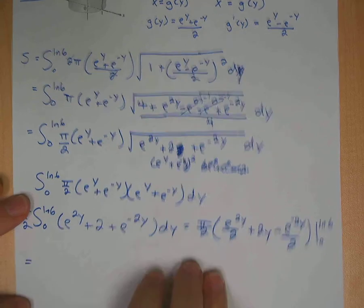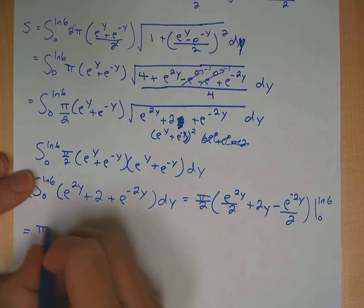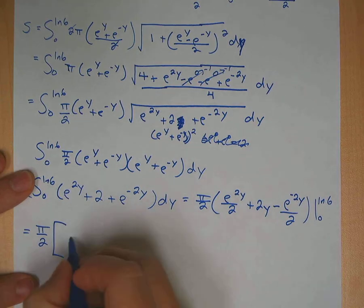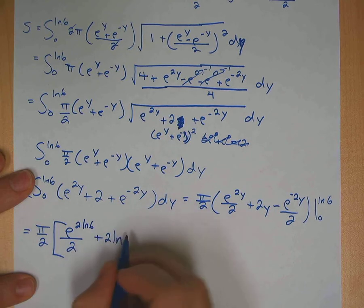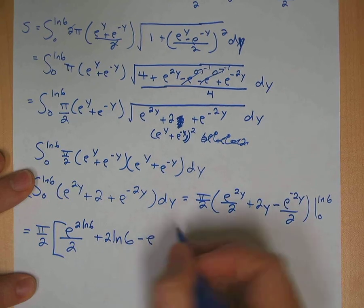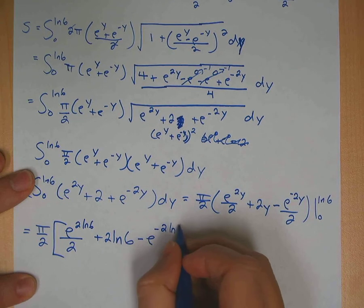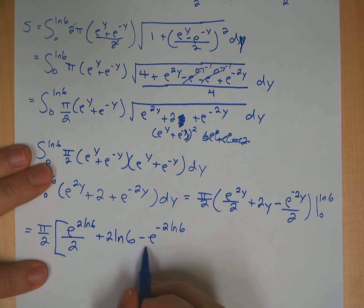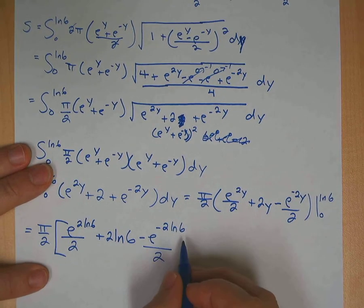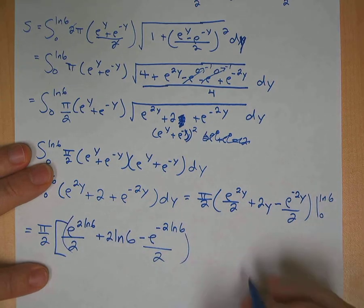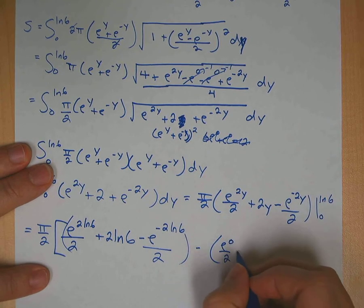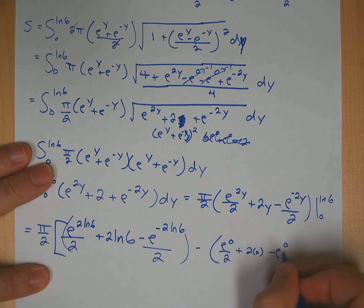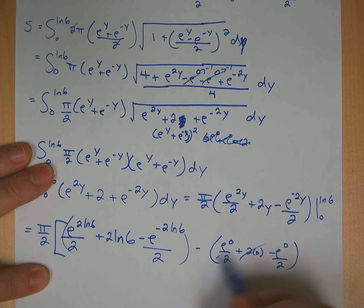Okay, so now just plug in our limits here. We're about done. Here's your π over 2 out front. You got e to the 2ln6 over 2 plus 2ln6 minus e to the negative 2ln6 over 2. So if you plug in the 0, you'll get e to the 0 over 2 plus 2 times 0 minus e to the 0 over 2. Notice the 0 there, and this one cancels to that one. So basically this whole thing is gone. And you're just looking at the first parentheses.